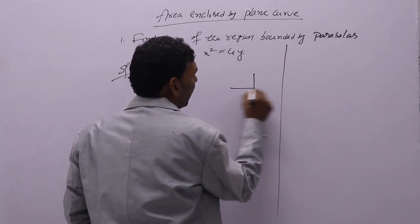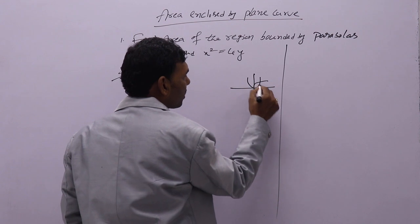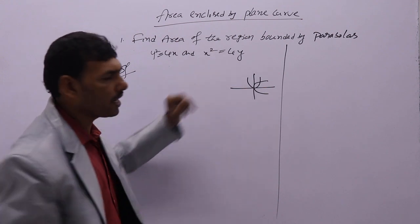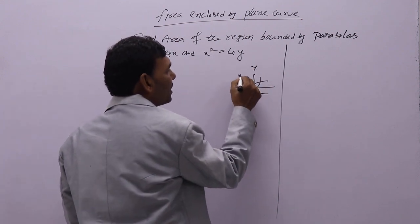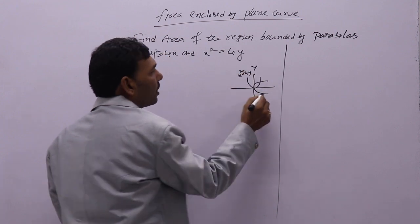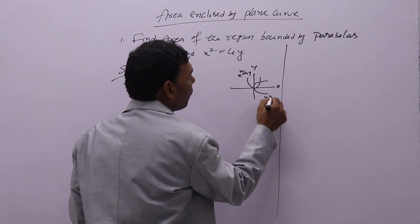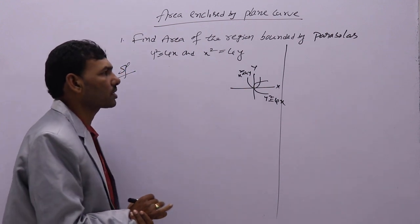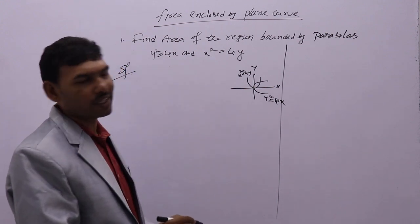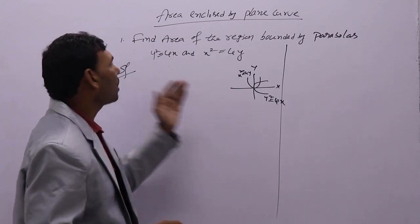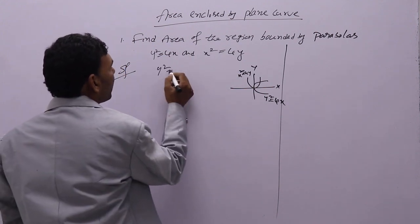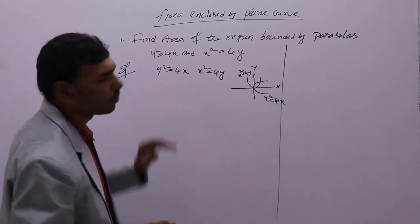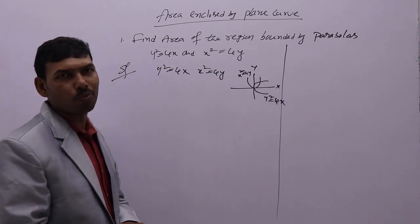Drawing the curves will be a little tough. We have x squared equal to 4y, where x has even power, so the curve is on the y-axis. The curve on the x-axis is y squared equal to 4x. Now we need to get the limits. For that, we simply solve the two equations: y squared equal to 4x and x squared equal to 4y. Simply square both sides.